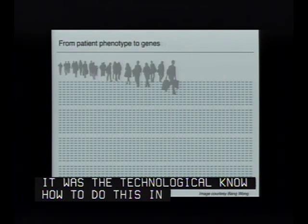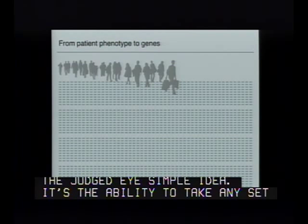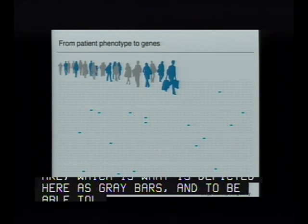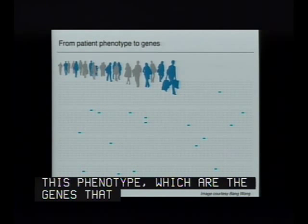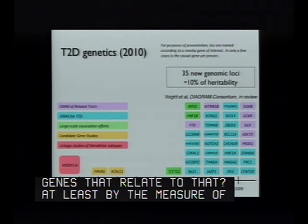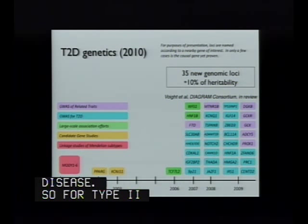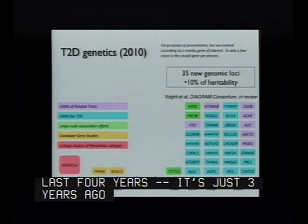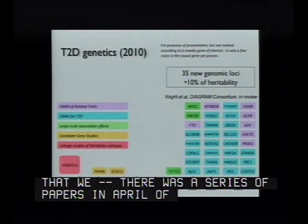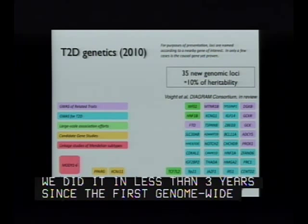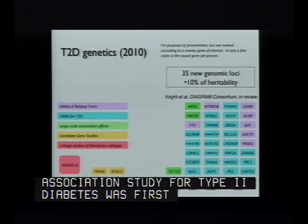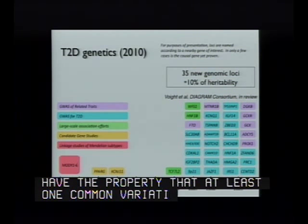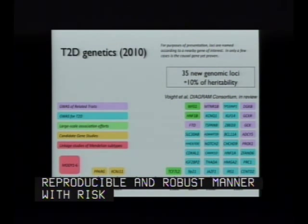The idea is simple: take any set of patients and ask which genes relate to that phenotype. For type 2 diabetes, in 2003 the answer was about 8 to 10 genes. In the last 4 years—the papers were actually published in 2007—we now have 35 new genomic loci identified where at least one common variation is associated in a reproducible and robust manner with the risk of type 2 diabetes. These variants contribute about 10% of the heritability of type 2 diabetes, up from 1%. And I should note that for the purposes of presentation, loci are named according to a nearby gene of interest; in only a few cases is the causal gene yet proven.